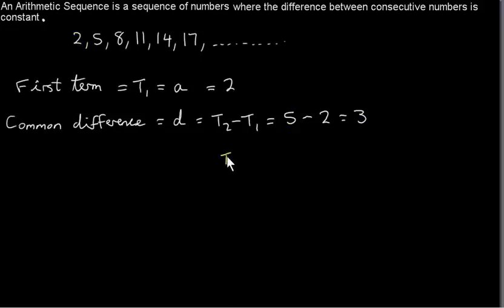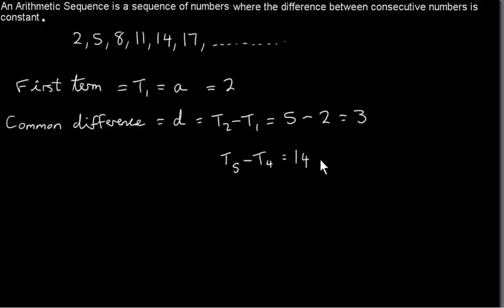Of course we could also work out, say, T5 minus T4. T5 is 14 — that's the fifth term — and T4 is 11, and that will also give us the difference d.